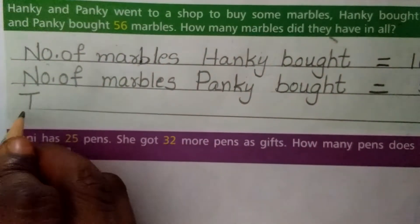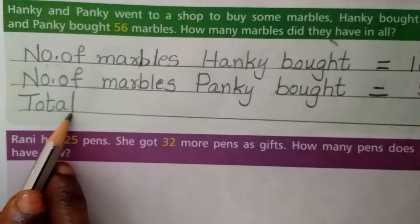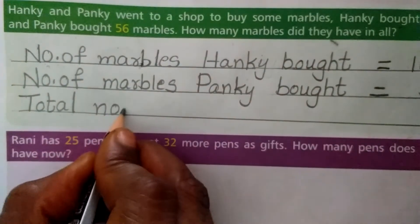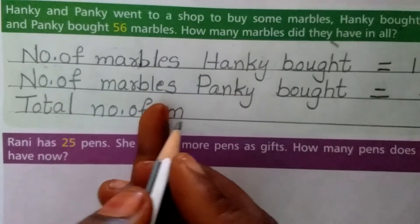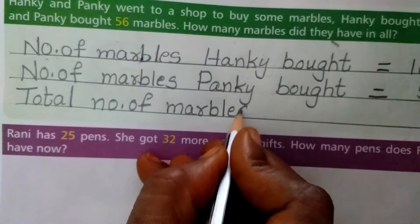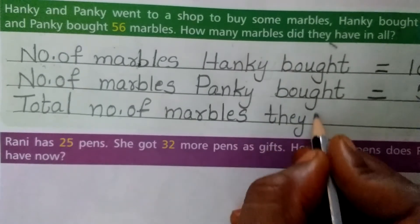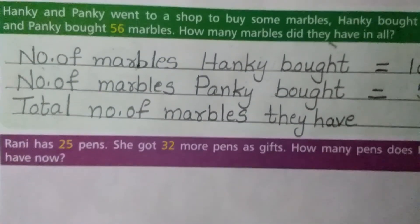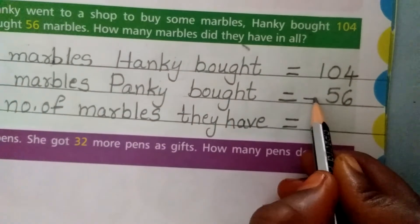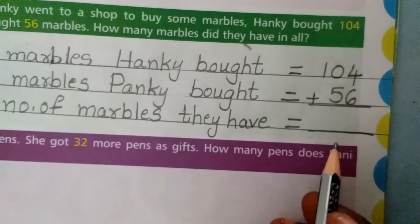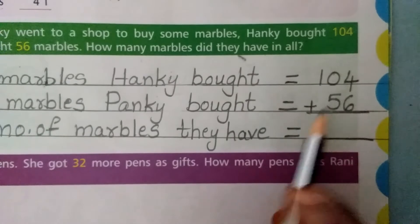Third step — capital T-O-T-A-L, total. N-O dot, O-F — number of marbles: M-A-R-B-L-E-S. Give a finger gap — T-H-E-Y, H-A-V-E, they have. Put is equal to. Now we have to add these two numbers — that's why we find the total number of marbles Hanky and Panky have.